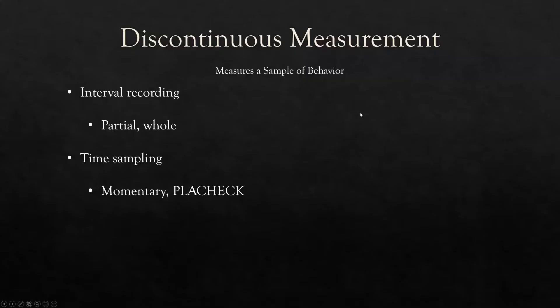Discontinuous measurement, in a nutshell, measures a sample of behavior. If we have a three-hour session and we're measuring behavior for the entire three hours, that's continuous measurement. If we only measure behavior for 20 minutes out of those three hours, that would be discontinuous measurement. It has its place, but it's clearly not as accurate as measuring something continuously.